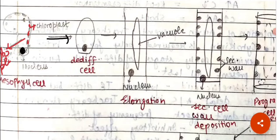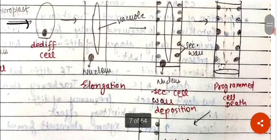Some changes will occur. First, elongation will happen. Cell enlargement will occur. And after that, secondary wall formation will happen.